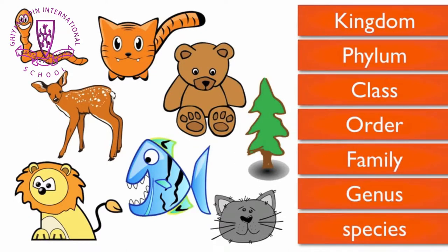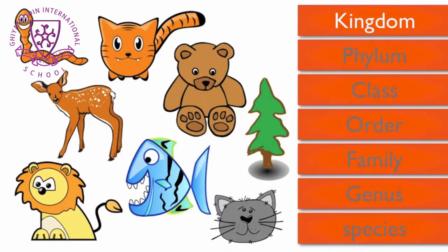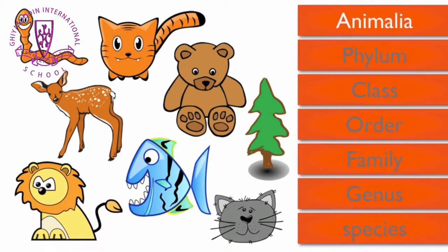A lion belongs to the kingdom Animalia, a group that includes animals. So the tree would not fit into this grouping — we can eliminate it.